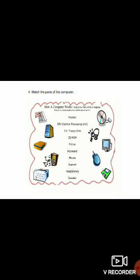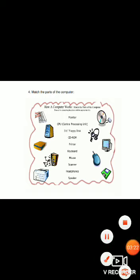Number 5 picture is printer on the left side, so match it with printer. On the right side — number 1 picture is CD-ROM, match with CD-ROM. Number 2 is headphones, match with headphones. Number 3 is monitor, match with monitor. Number 4 is mouse, match with mouse. Number 5 is 3-and-a-half floppy disk, match with floppy disk. Now all of you do these worksheets in your copy. Thank you.